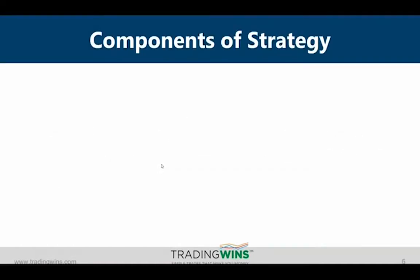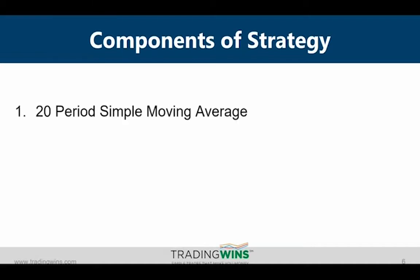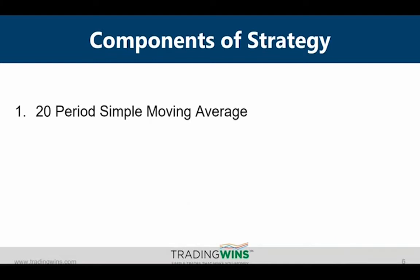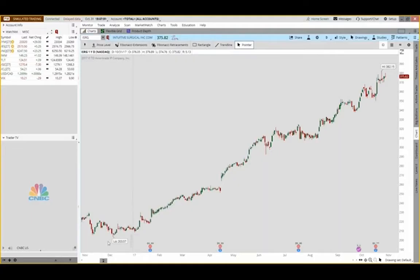Let's talk about the strategy and its components. There are only two things you're going to be looking for on your chart. Number one is something we've included in all of our strategies: the 20-period simple moving average. We have tested this system with exponential, weighted, the 50, the 100 — different time periods — and we've always come back to the 20 because it works best. We're going to use it for momentum. Second, you'll be looking for an engulfing candlestick pattern — a classic reversal pattern. I'll explain how to recognize it and trade it step by step.